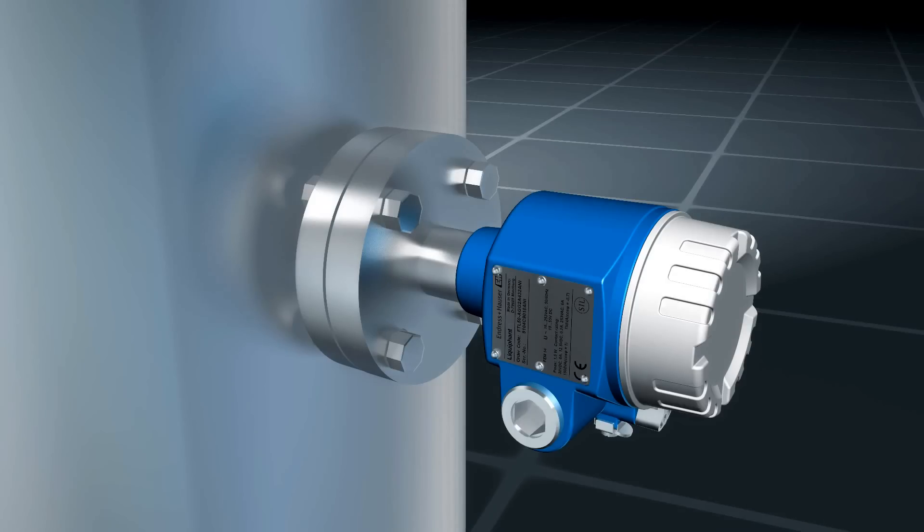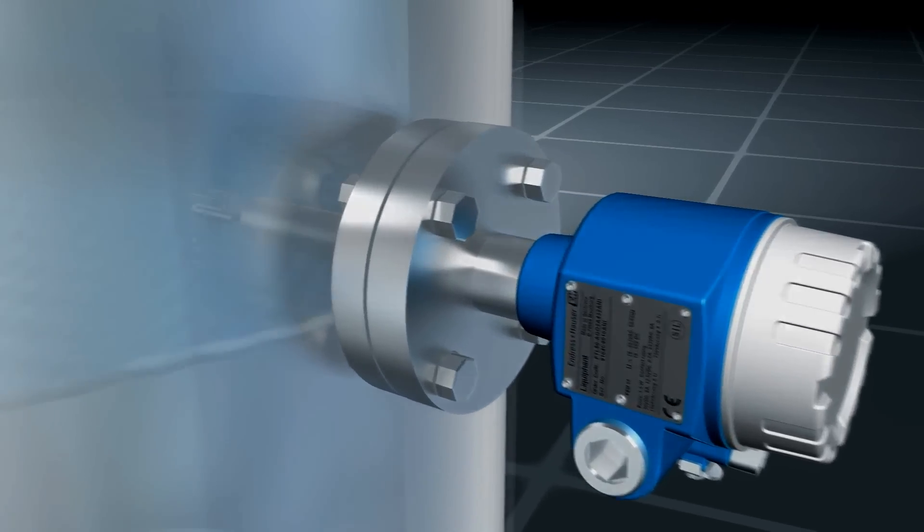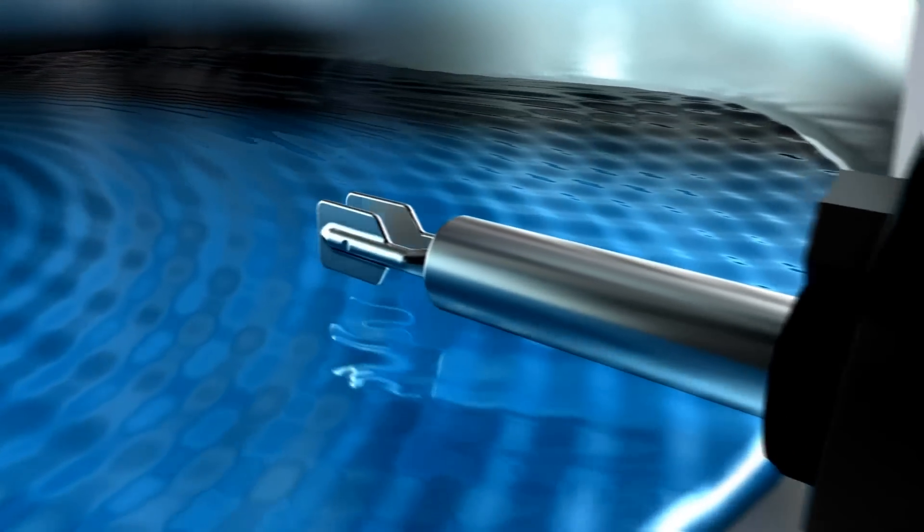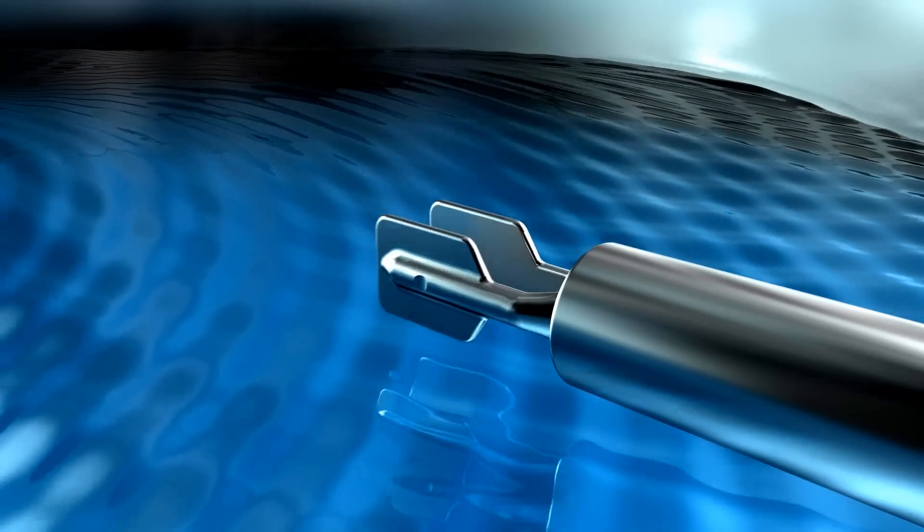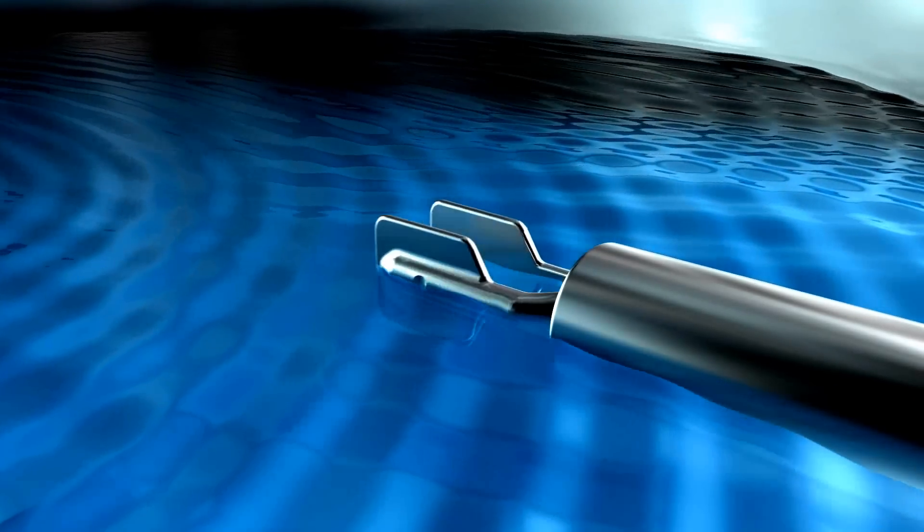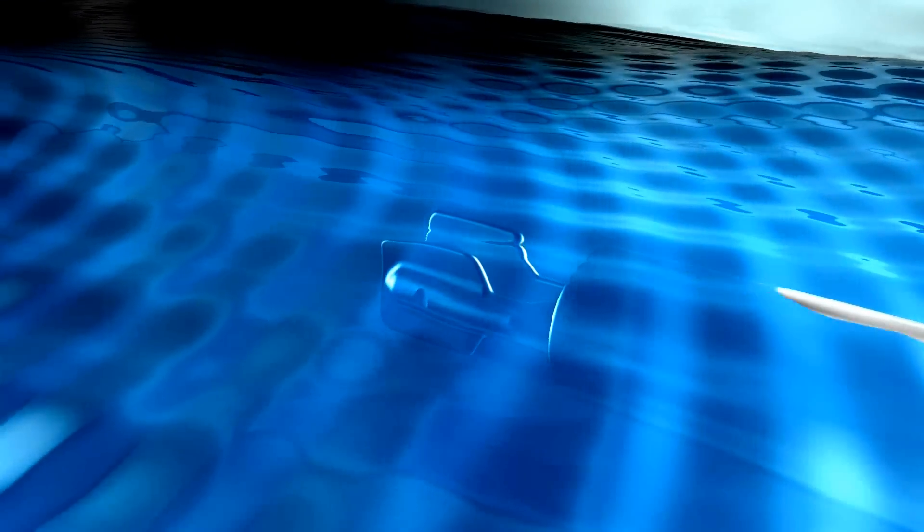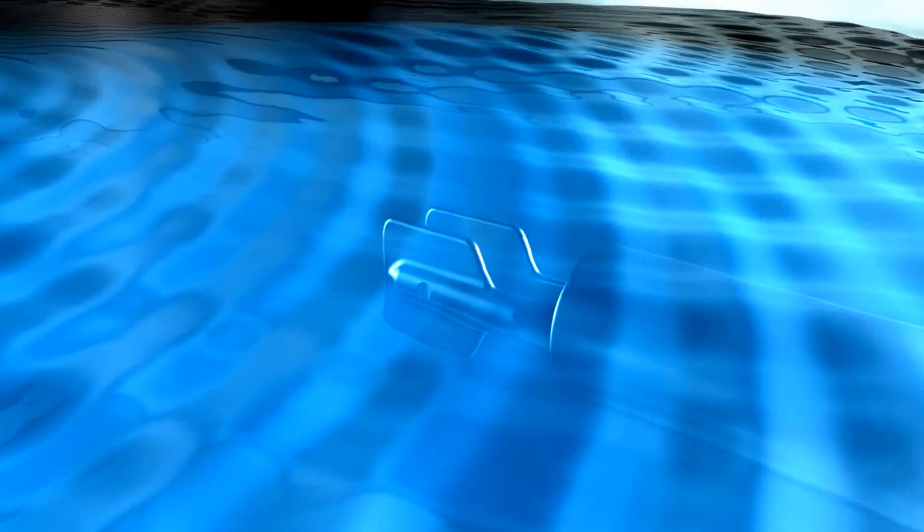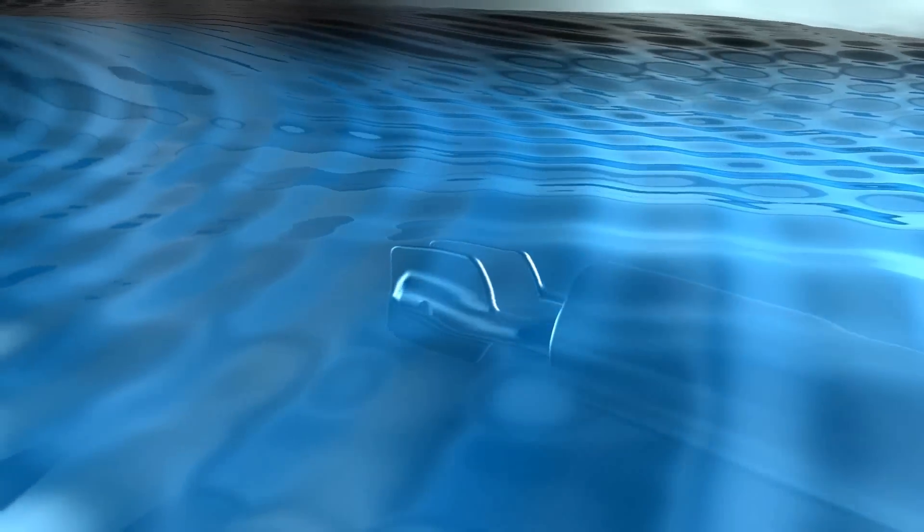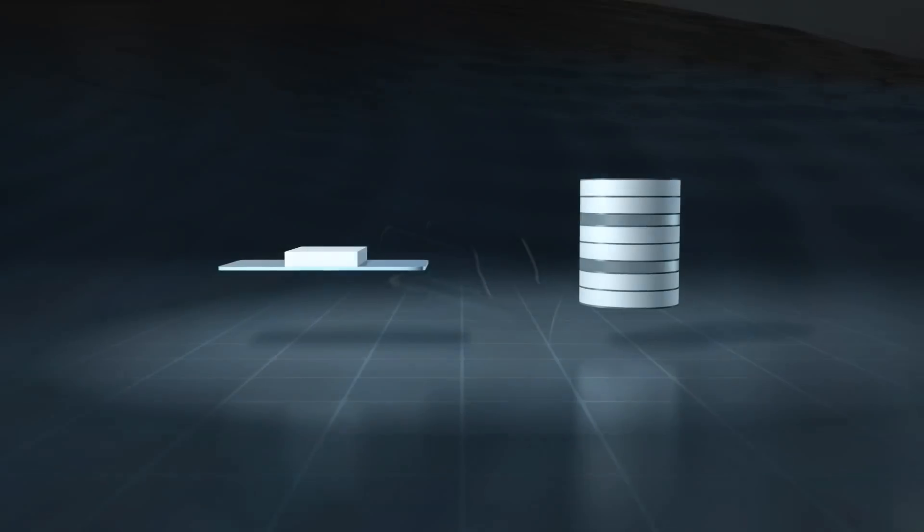Vibronic instruments monitor point levels in tanks, containers, and pipes. A sensor in the form of a tuning fork is excited to its resonance frequency. The vibronic measuring principle in liquids is based on the resonance shift of a piezo-electrically excited oscillation system.